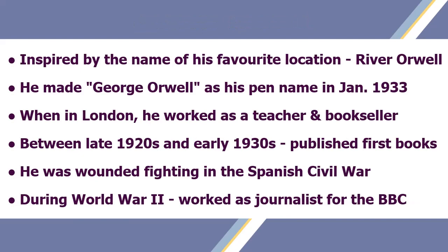Inspired by the name of his favourite location, River Orwell, he made George Orwell his pen name in January 1933. In London, he worked as a teacher and bookseller. Between the late 1920s and early 1930s, he published his first books, and then became very popular.